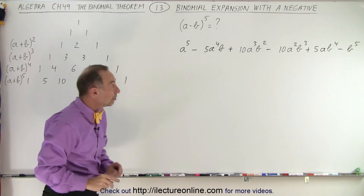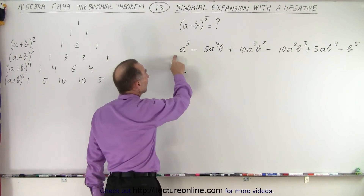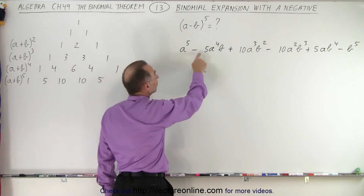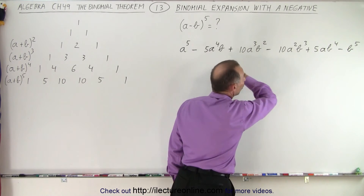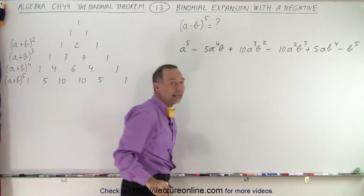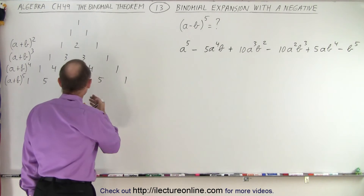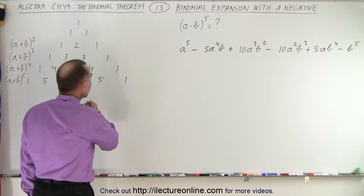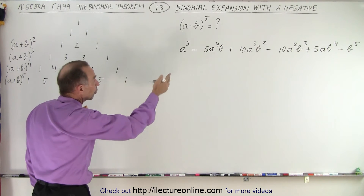If it's a minus b, we start with a positive sign then a negative, a positive, negative, positive, negative all the way through. And that will work for any binomial expansion regardless of the number of terms.